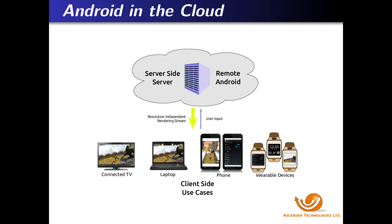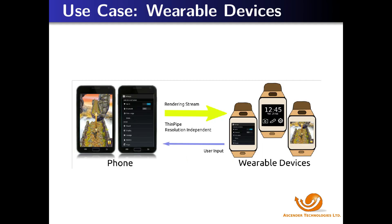In this system diagram, the server side is pictured on the upper part, and the client side is on the lower part of the diagram, where we show some examples of use cases. We also show Ascender's technology applied to a non-cloud use case: the Android phone functions as a normal phone, but also has the capability to provide remote graphics apps running on the phone and rendered on a wearable device, allowing Android Wear apps on devices not running Android.